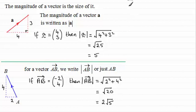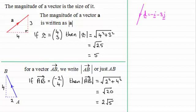Now vectors don't have to come as column vectors, they can come in i's and j form. And so I've got this vector here d which is minus i minus 3j. So what would the magnitude of this vector be? Well if I wrote it out it's going to be the magnitude of the vector d is going to equal